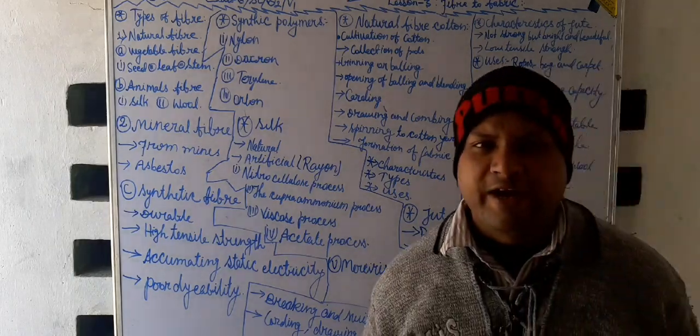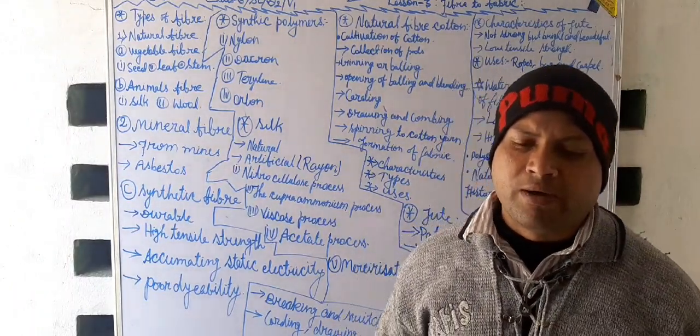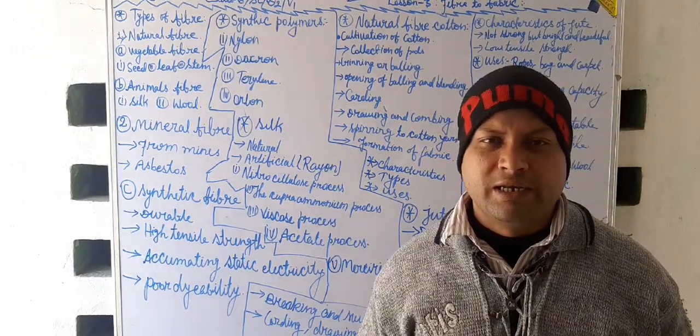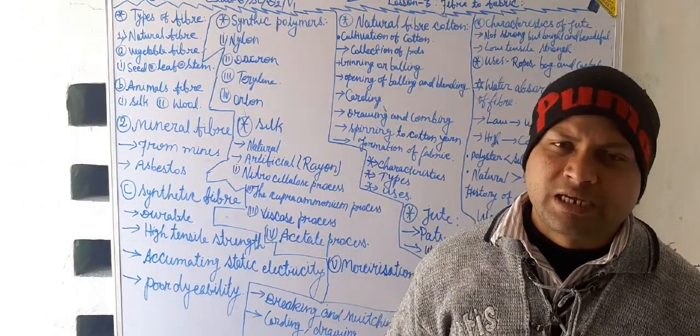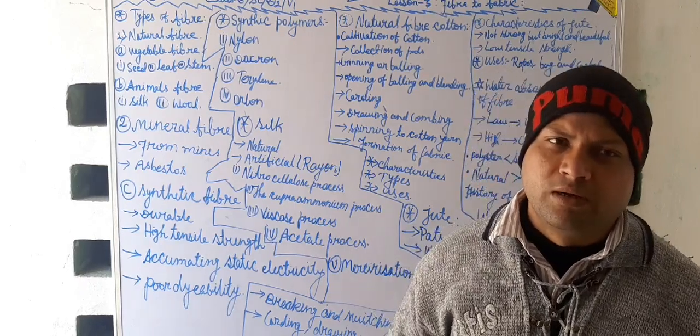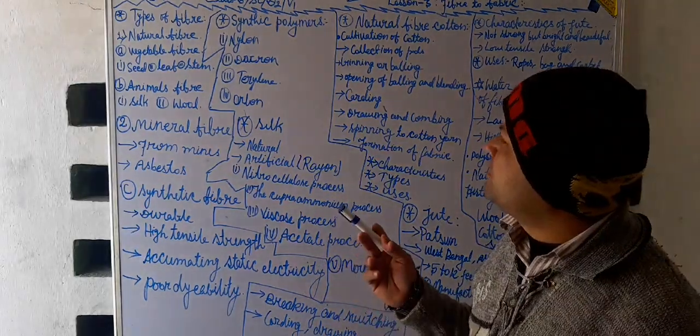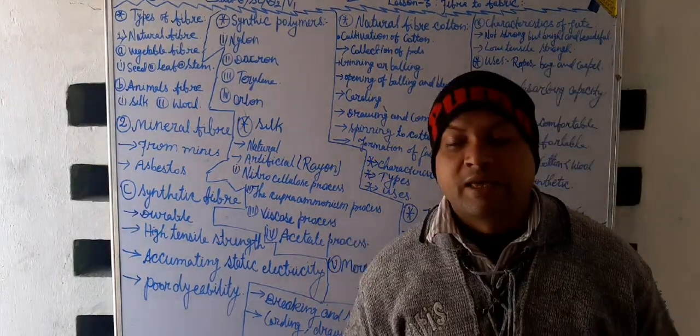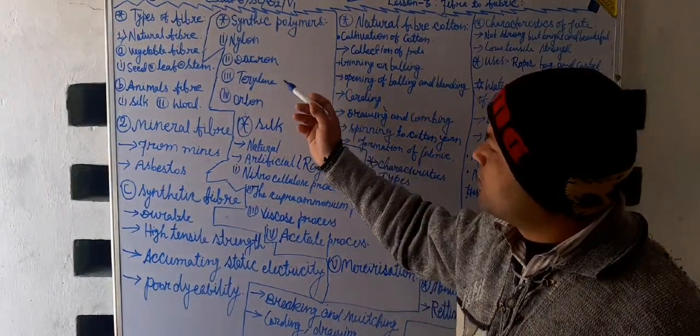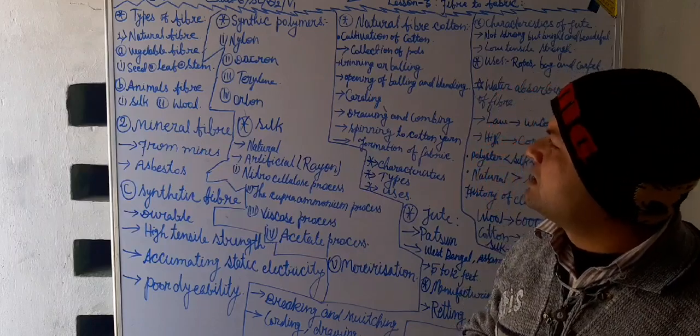Now, look at synthetic fibers. It is very strong in nature because having high tensile strength. And it is most durable clothing materials. There are many types of synthetic fibers just like nylon, acrylon, terylene and orlon.